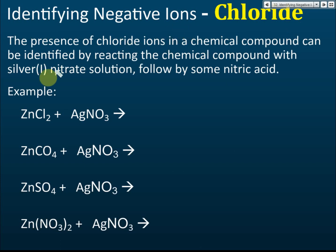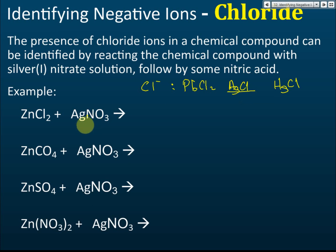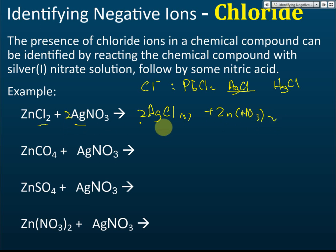For chloride, the test is similar but this time we use silver nitrate. Looking at solubility of chlorides: most chlorides are soluble except PAH — lead chloride, silver chloride, and mercury chloride. So if zinc chloride reacts with silver nitrate, it will form silver chloride — an insoluble white precipitate — and zinc nitrate.